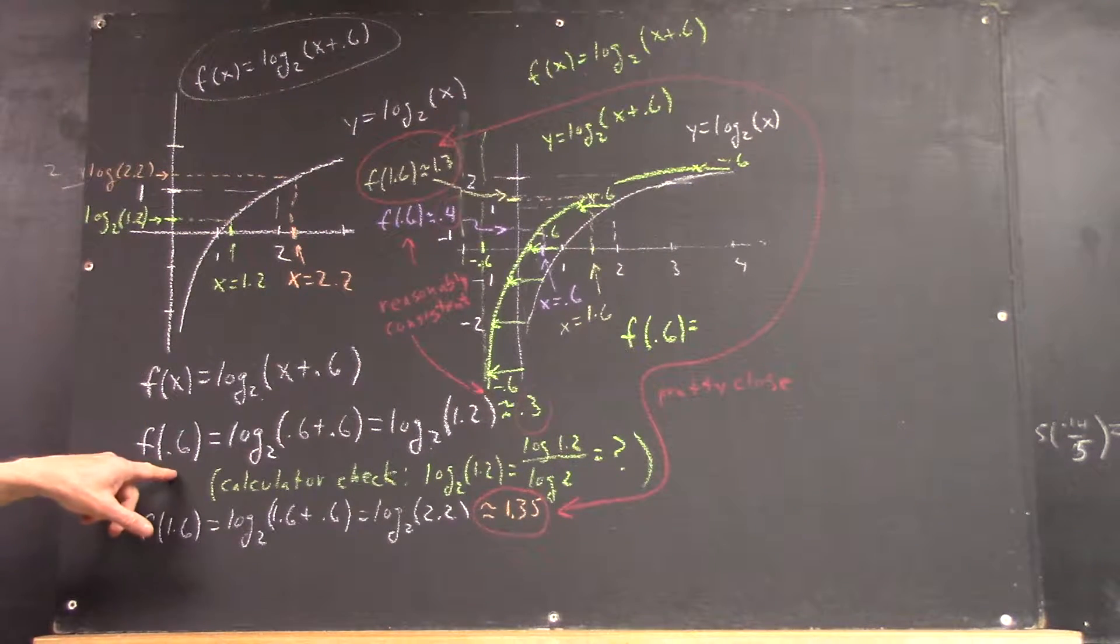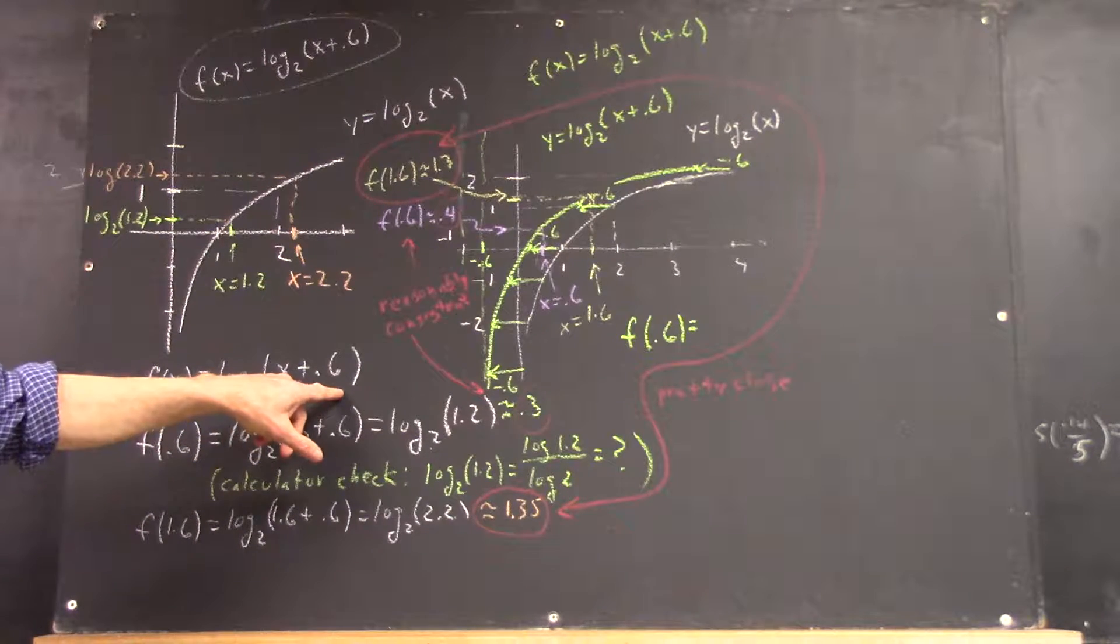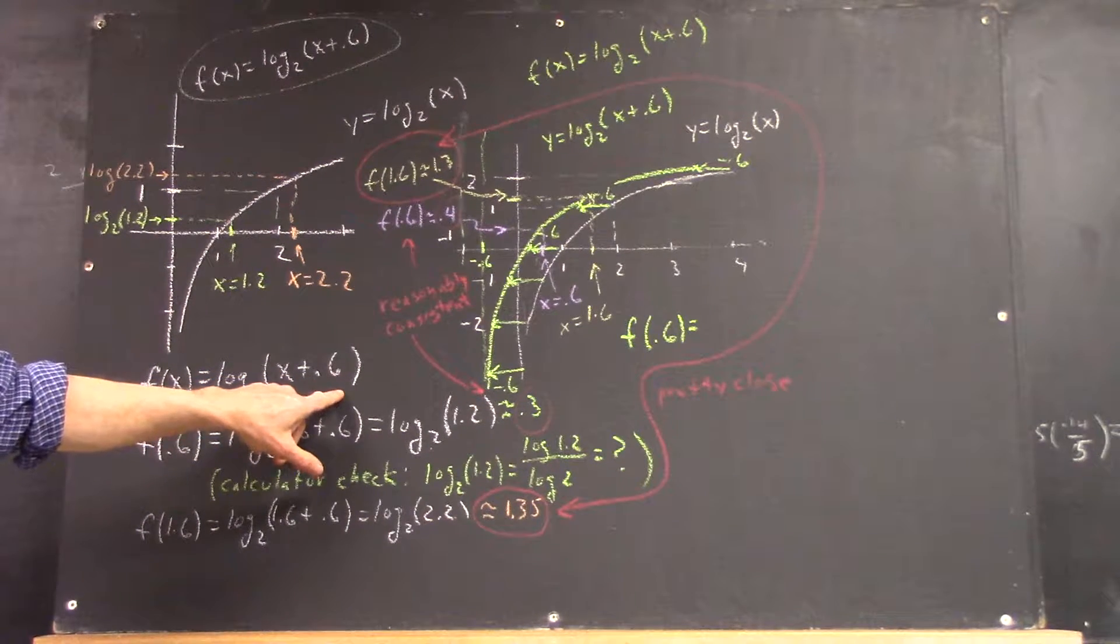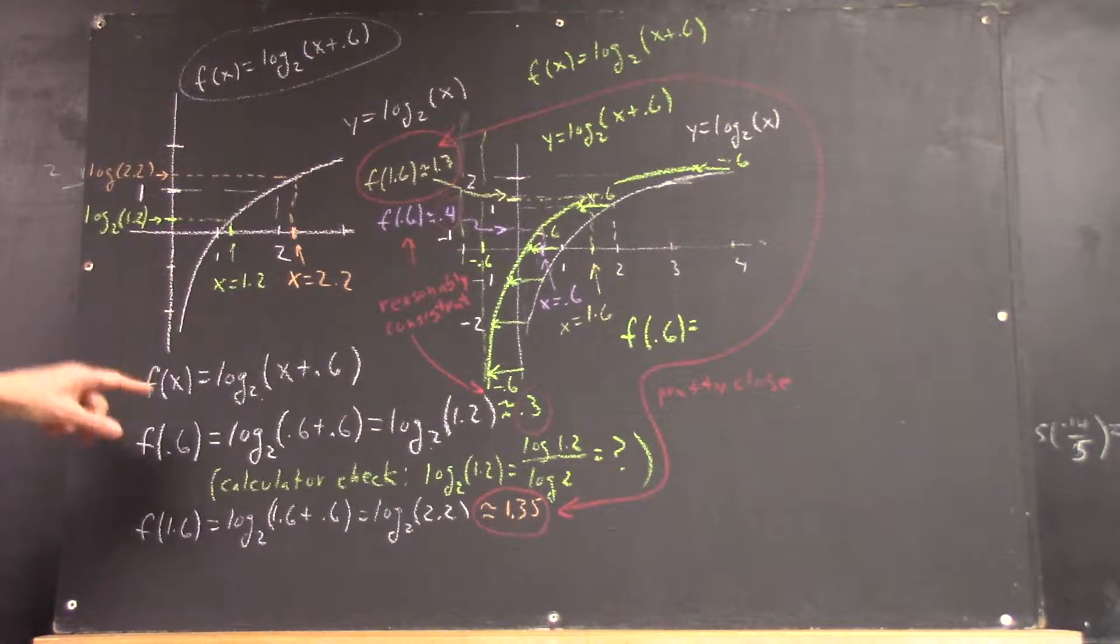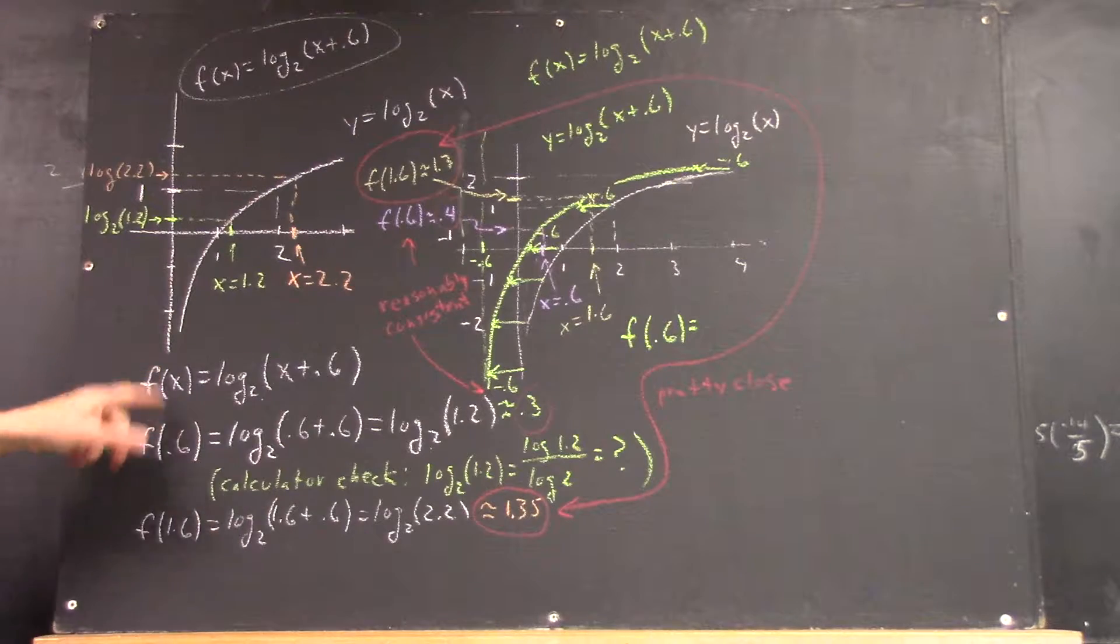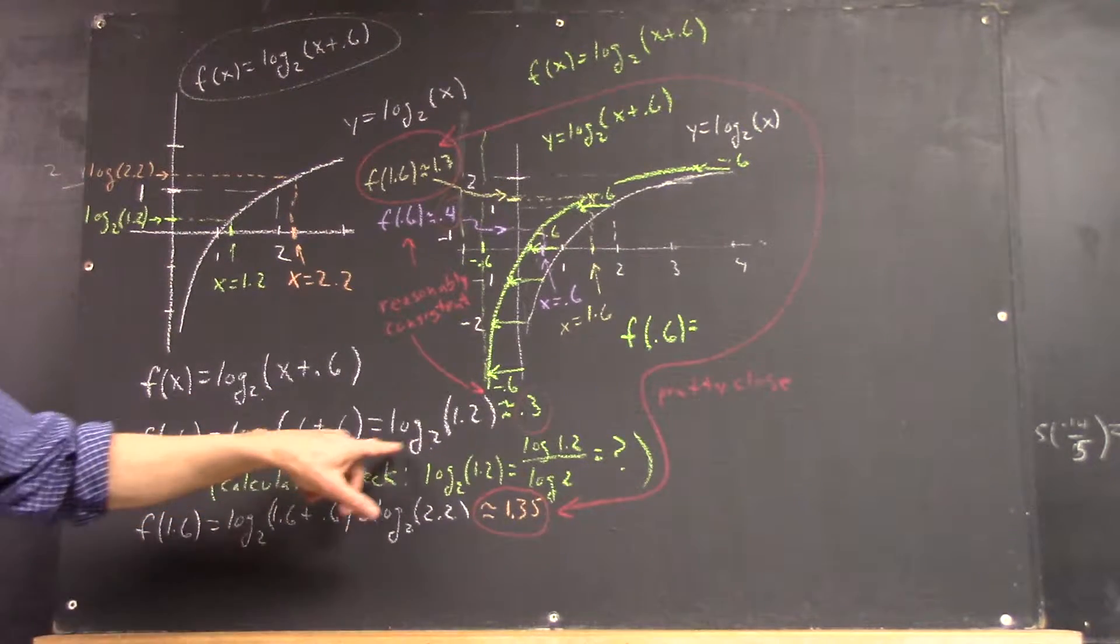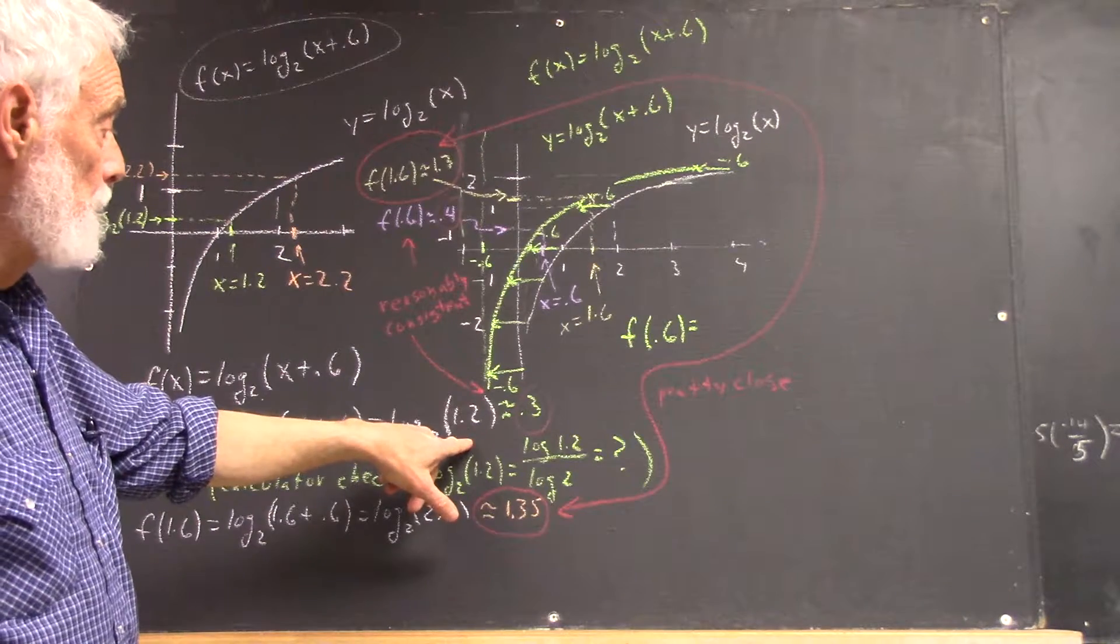So, what's f of 0.6? f of x is log base 2 of x plus 0.6. So, f of 0.6 is log base 2 of 0.6 plus 0.6. Replace x by 0.6. So, you replace x by 0.6, you get log base 2 of 1.2.